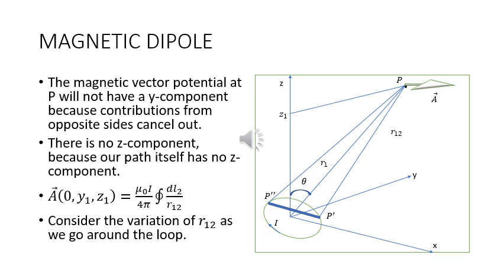The magnetic vector potential at P will not have a y-component because contributions from opposite sides cancel out. There is no z-component because the path itself has no z-component. So, A(0, y1, z1) where (0, y1, z1) are coordinates of point P, is given by μ₀I upon 4π closed integral dl₂ upon r₁₂.